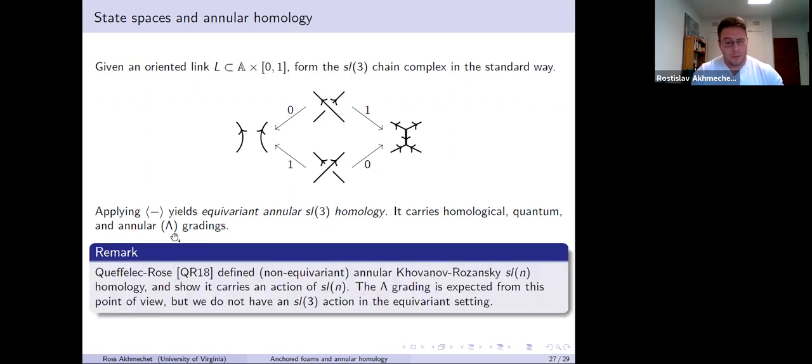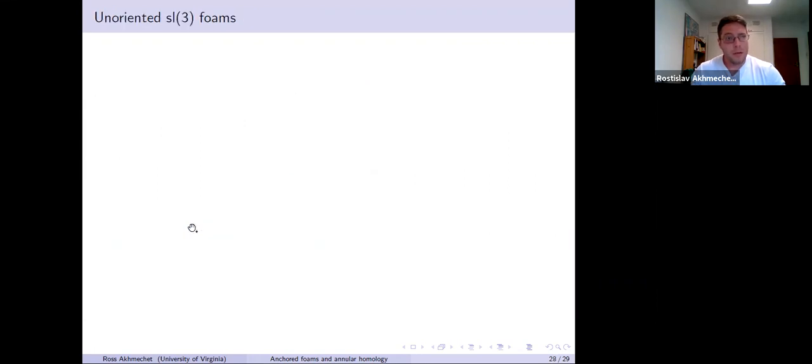One word about this annular degree: Queffelec and Rose defined non-equivariant annular Khovanov-Rozansky SL(N) homology for N in N using traces of categorified quantum groups. They show that it has an action of SL(N). This generalizes a result of Grigsby, Licata, and Wehrli in the SL2 setting. From this perspective, this lambda grading is kind of expected. It's like the SL3 weight lattice, even though we don't have an SL3 action in the equivariant setting, or an SL2 action in the equivariant setting from the first part.